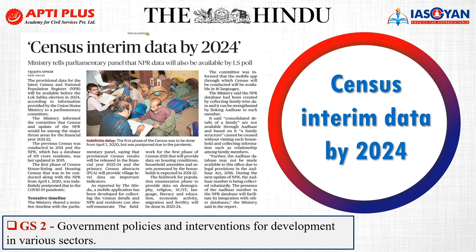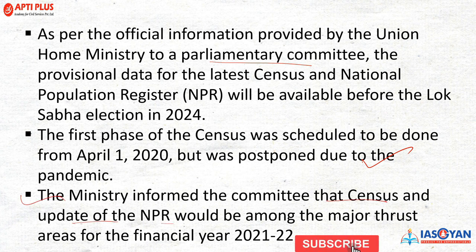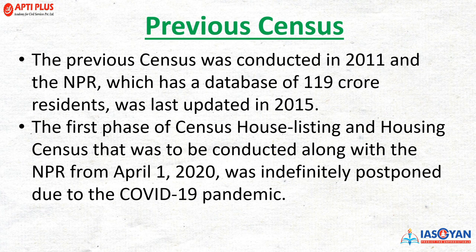The next news: Census and updated data by 2024. The government has clarified that they would be coming up with census data by 2024. This is important for General Studies Paper 2 on government policies and intervention for development in various sectors. Officially, confirmation has come from the Home Ministry. The previous census was conducted in 2011, and the latest figures we have for reference are from 2011. The NPR — National Population Register — is a database of 119 crore residents, last updated in 2015.